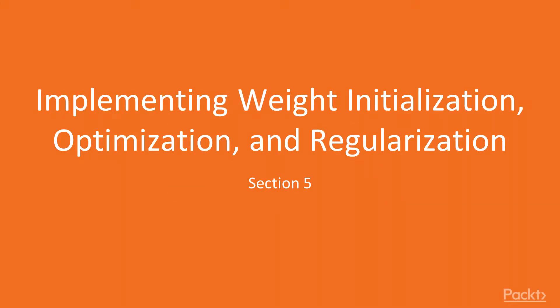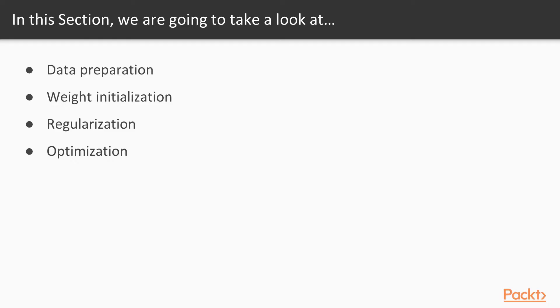Welcome to the fifth section: Implementing Weight Initialization, Optimization and Regularization. In this section, we will try and formulate steps to build a machine learning agent, starting from data preparation to optimizing the network architecture to improve model accuracy.